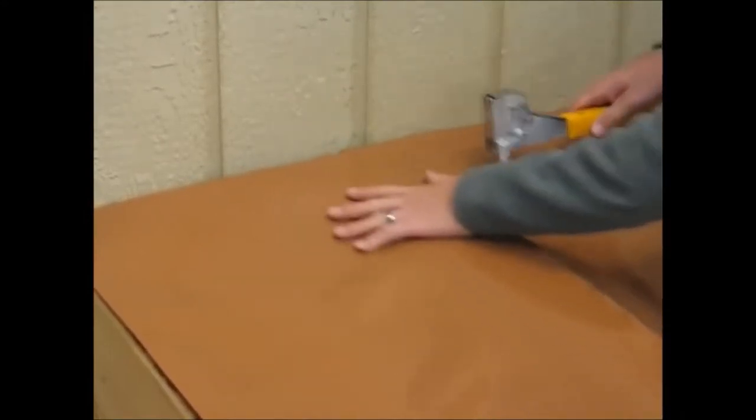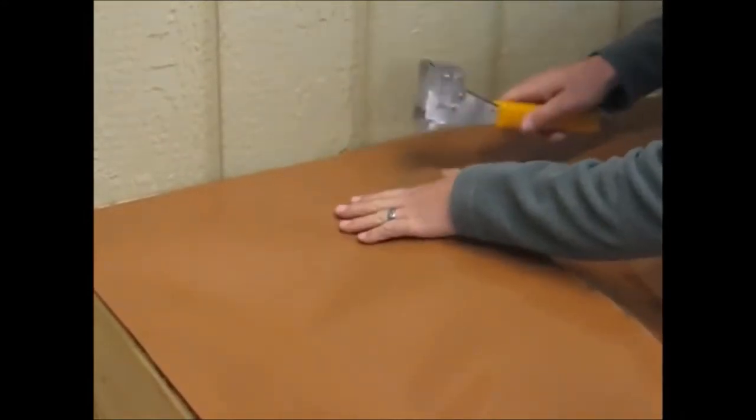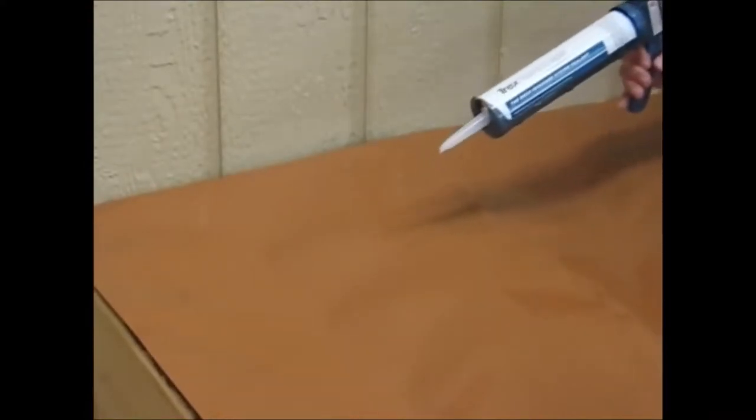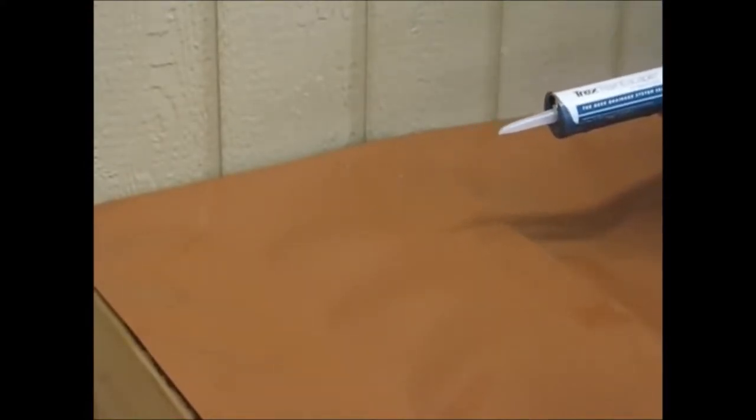The reason that we want to put down the trough material first is that the butyl caulking that we use is very sticky and messy. To keep the area clean and the caulking covered, we install it after the trough material is in.